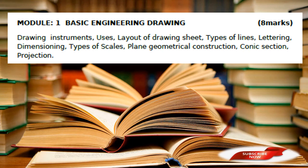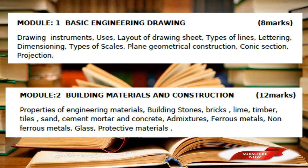Same — Module 1 and Module 2. In Module 2, it is building material and construction, with a size of 12 marks. Topics include: properties of engineering materials — building stone, brick, lime, timber, tile, sand, cement mortar, concrete, atmospheres, ferrous metal, non-ferrous metal, glass, protective materials such as paint, varnish, etc. That is building materials and BMC. You will cover all of these things for the officer exam.